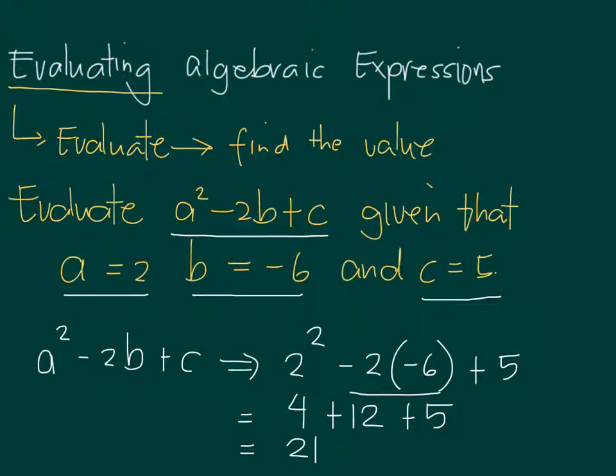That is the value of a squared minus 2b plus c when a is 2, b is negative 6, and c is 5. Again, when we say evaluate, we find the value given the conditions.